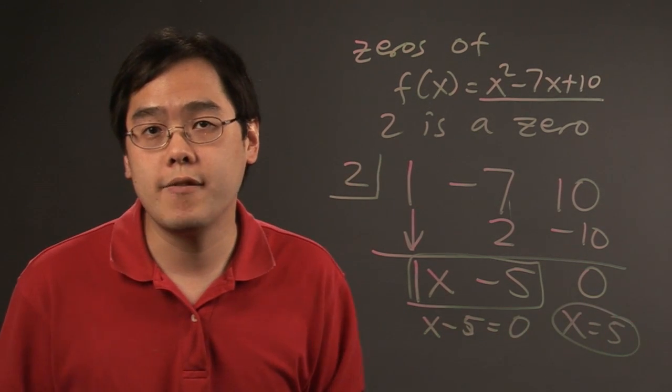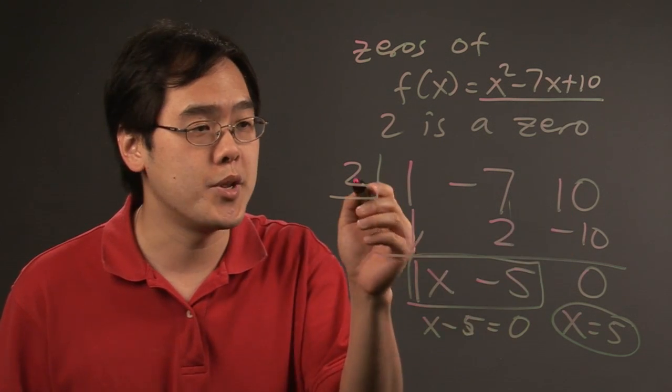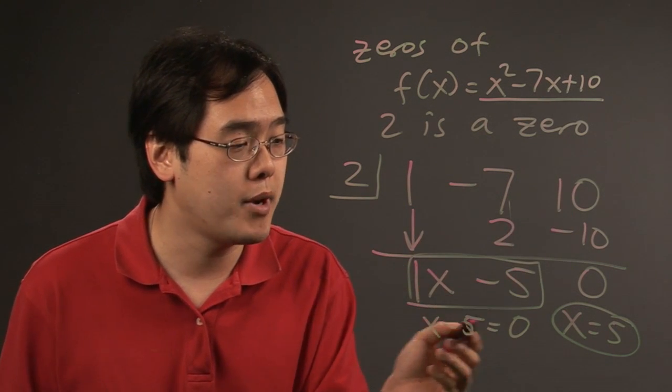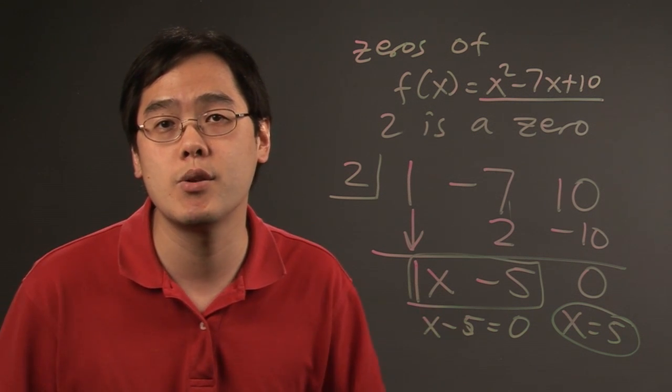So the basic idea of finding zeros using synthetic division is set up the polynomial using numbers, put the number in the box, and then take the remaining polynomial and solve. I'm Jimmy Chang, and that's how to do synthetic division to find the zeros of a function.